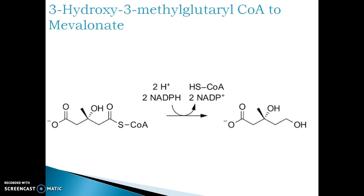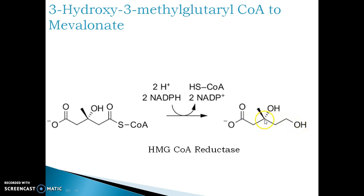HMG-CoA in the next step is converted into mevalonate by the enzyme 3-hydroxy-3-methylglutaryl coenzyme A reductase. The structure of mevalonate contains pentanoic acid having 2 hydroxy groups, one at the 3rd position and one at the 5th position. It also contains one methyl group at the 3rd position.